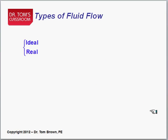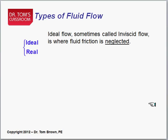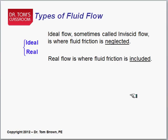And the last pair is real and ideal. Ideal is what you sort of study first. It's sometimes called inviscid flow, and it's where the fluid friction is neglected. Lots of problems in fluids where that is the case. We'll be doing those first. Real flow is where the fluid friction is included. And we're going to be looking at flow in a pipe, the Moody diagram, and all that sort of thing.